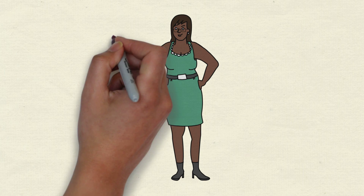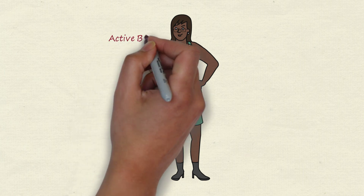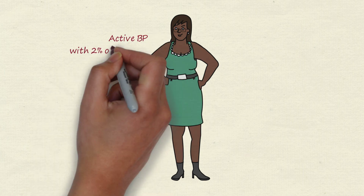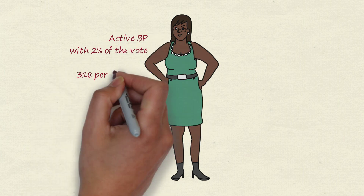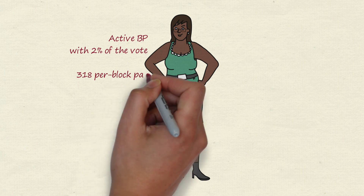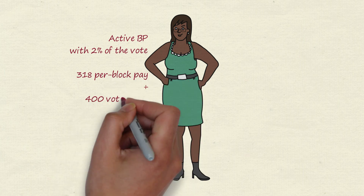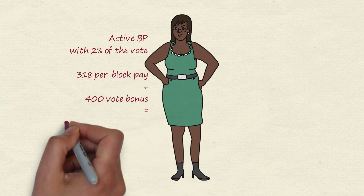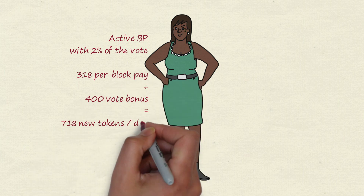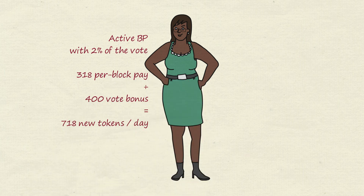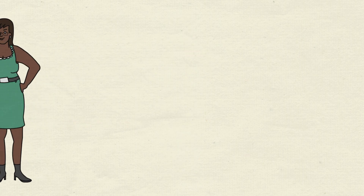Here's a use case. Here's an active producer. This producer has got 2% of the vote, which is pretty high. They're getting 318 per block pay per day, and another 400 in vote bonus. That's 718 new tokens per day.